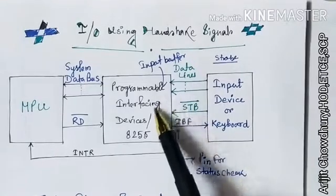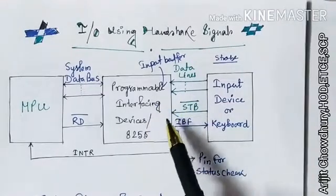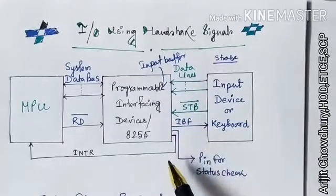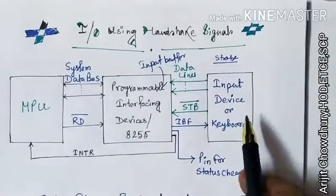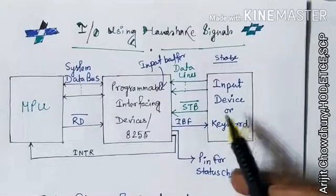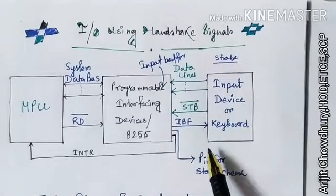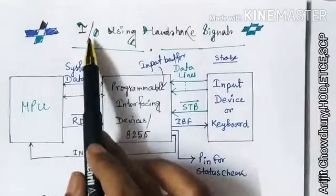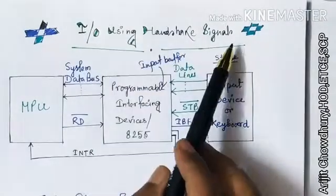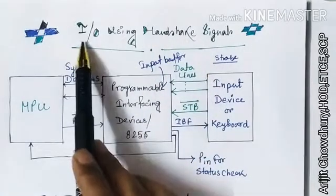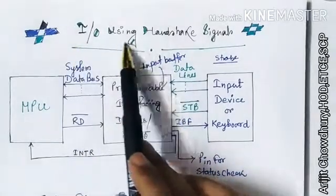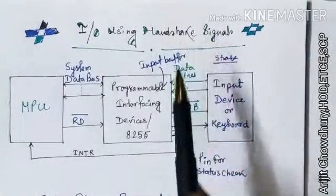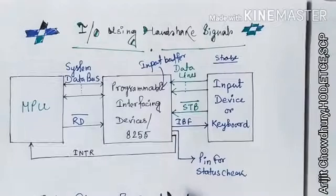The programmable interfacing device or 8255 has some input/output ports: Port A, Port B, and Port C. Here we are considering input mode or input interfacing. The heading is input-output using handshaking signals. We are considering only input interfacing using handshaking signals. Output signal using handshaking is another part.